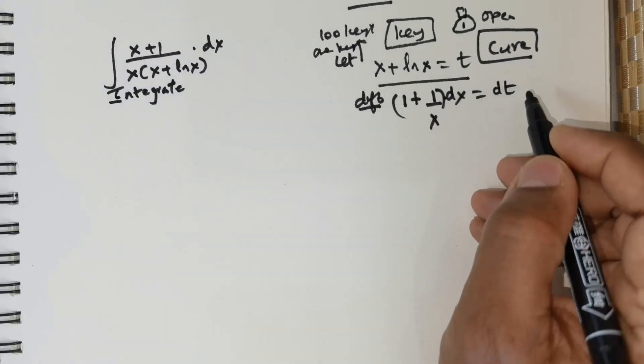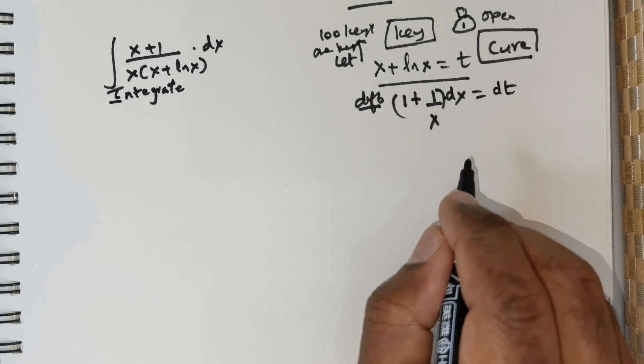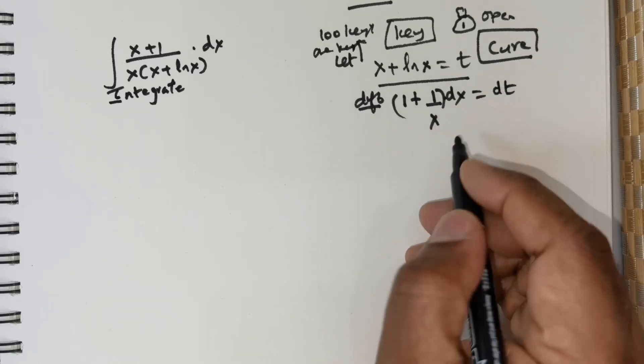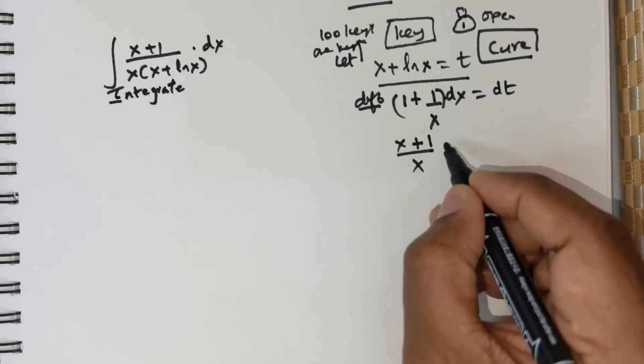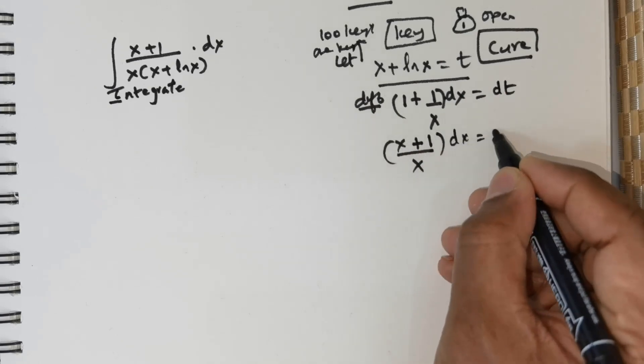So differential of t is going to be dt. So having got this, I can simplify this to be (x + 1/x)dx = dt.